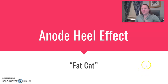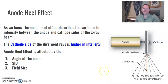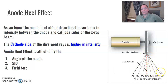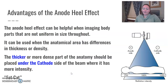Anode heel effect part two. I'm going to talk about how to use the anode heel effect to your advantage and how to use this fat cap concept, because it can help you with different thicknesses of anatomy. The anode heel effect is the variance or difference in intensity between the anode and cathode sides of your beam, and the cathode side of your divergent ray has higher intensity. It can be increased or decreased by the angle of the anode, SID, and field size, but it can be used to your advantage as a technologist.